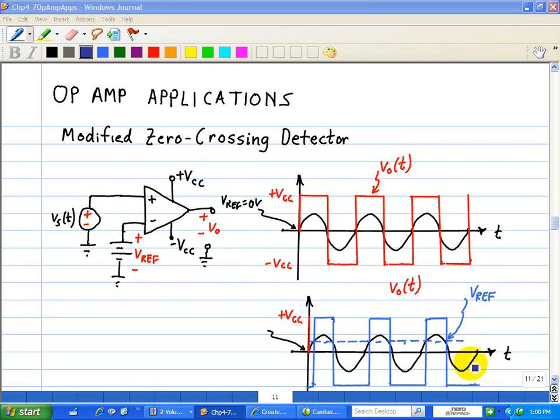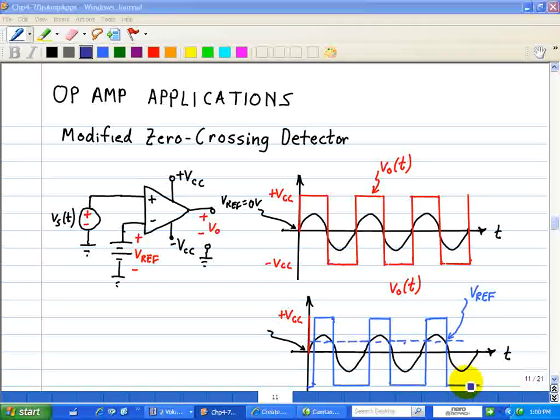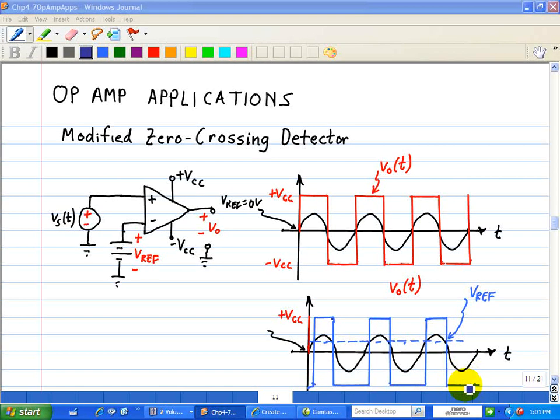And below the reference, it stays at a low state. So again, the comparator output either rails to plus VCC or minus VCC, and the only thing we change here from the previous one is the V reference. It's no longer comparing it with zero, but we're comparing it with V reference. That concludes this application of a zero crossing detector using comparators.